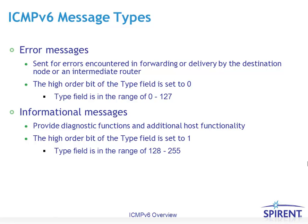Error messages are sent for errors encountered in the forwarding and delivery path by the destination node or an intermediate router. Informational messages provide diagnostic functions and additional host functionality, as mentioned on the previous slide.